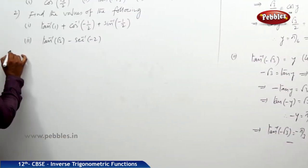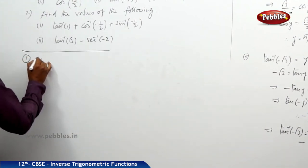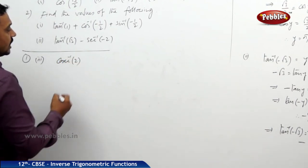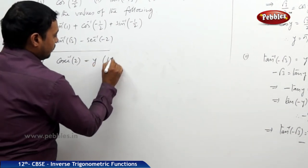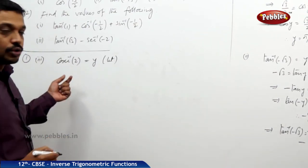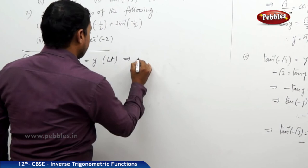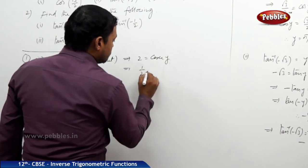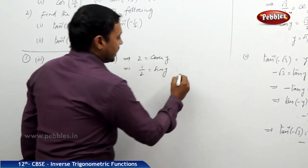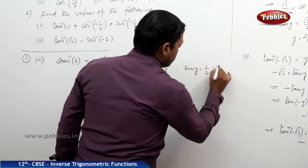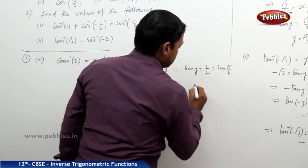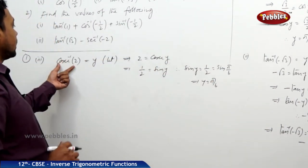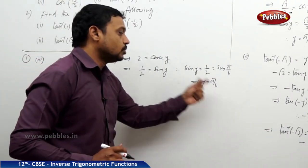Third: cosecant inverse of 2. Let it be y, so cosecant inverse 2 equals y. This implies 2 equals cosecant y. Taking reciprocals, 1 by 2 equals sin y. Therefore sin y equals 1 by 2. But 1 by 2 equals sin pi by 6. Hence y equals pi by 6. Since y is cosecant inverse 2, cosecant inverse 2 equals pi by 6.